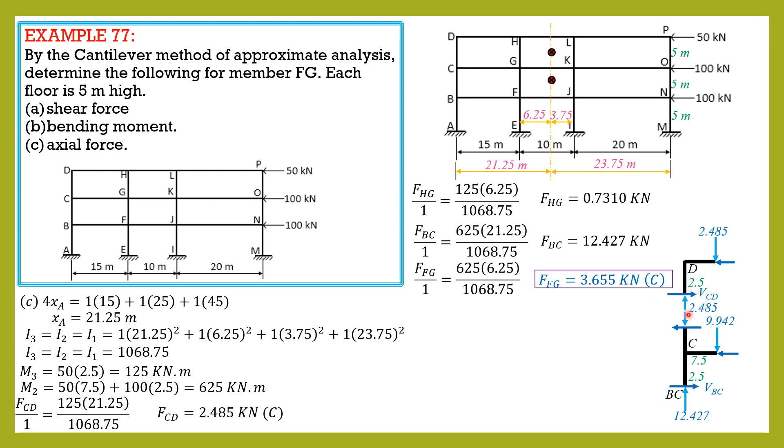Remember that this is FCD 2.485. This is also in compression because the forces are at the left, also 2.485. Then force in BC 12.427. Therefore, this is equal to 12.427 minus 2.485. That's why we have 9.942 kilonewtons.